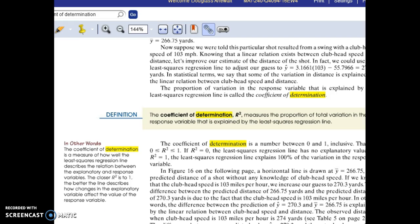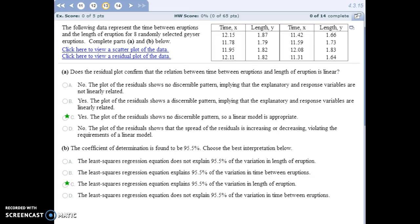So, we really want to phrase our answer to how to be about the response variable and how we can explain the response variable. So, with the 95.5% and our response variable being the length of the eruption, we want to say the least squares regression equation explains 95.5% of the variation in the length of the eruption.